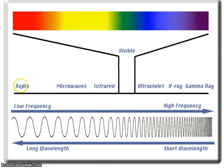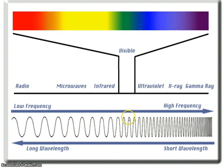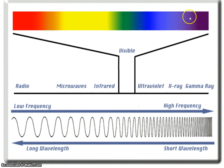Radio waves have the lowest frequency and the lowest energy. Gamma rays are very dangerous, having high frequencies and high energy. This small section of electromagnetic waves is the only wavelength that our eyes can see — we call it the visible light spectrum, going from red, orange, yellow, green, blue, indigo, and violet. Roy G. Biv. These are the colors of the spectrum that we can see with our eyes.